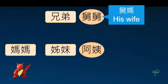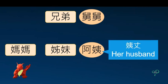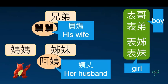Mother's siblings are easier. Her brothers are all called 舅舅, and I call their wives 舅媽. And the mother's sisters are all called 阿姨, and their husbands are called 姨丈. All their children are my 表 siblings because they all have different family names from me.